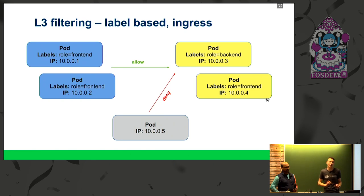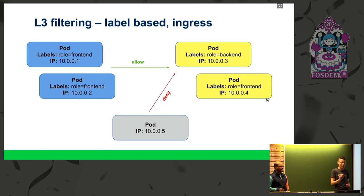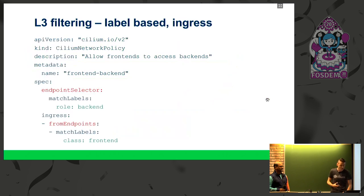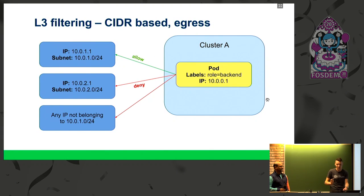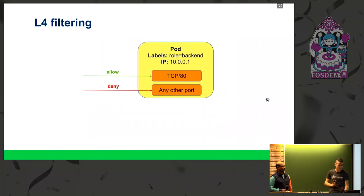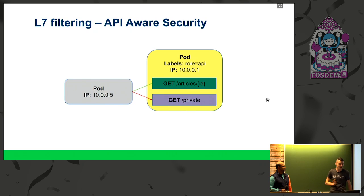Kubernetes already provides the abstraction called network policies, which applies at layer three and layer four. One form of L3 filtering is label-based ingress filtering. For example, you have frontend and backend pods, and you can allow only frontend pods to contact the backend but deny everything else. There are also examples of egress filtering where you restrict pods from connecting to the outside world. And there is also filtering for allowing only particular pods to connect in — including L7 filtering which takes care of acknowledging HTTP protocols and specific HTTP endpoints you can connect to.